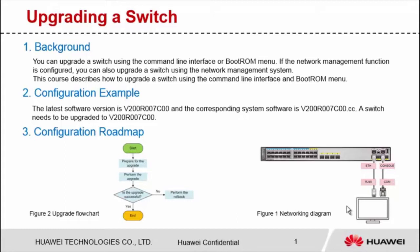Here is an example. The latest software version of the S5720H1 switch is V200R007C00 and the corresponding system software is V200R007C00.cc. We can use the command line interface or boot ROM menu to upgrade an S5720H1 switch running V200R006 to the latest version.